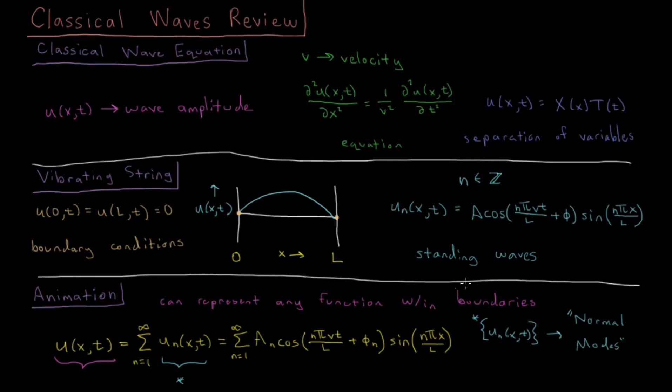And this can be used to represent any function, and we can get a wave which moves back and forth and has any behavior we want. And we saw several examples of how those waves can behave when you choose different values of the amplitude for each individual normal mode.